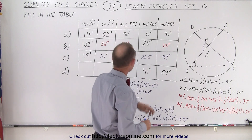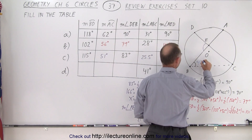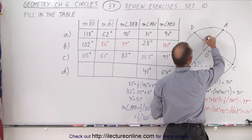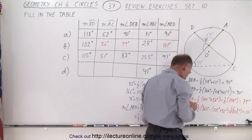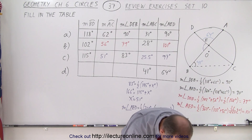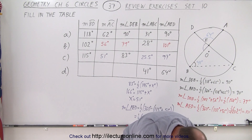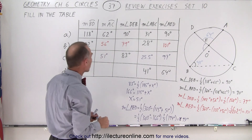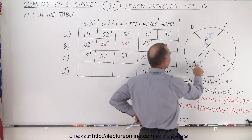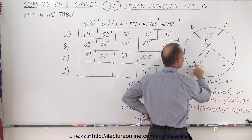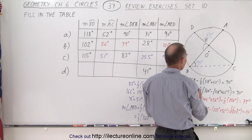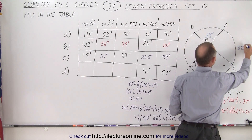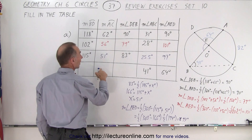For Part D, they give us the measure from A to B to C, which is 41 degrees, and the measure of angle A-E-D, which is 64 degrees. If angle A-B-C is 41 degrees, then the arc from A to C must be double that — 82 degrees — since the inscribed angle is half the intercepted arc. So the measure from A to C is 82 degrees.